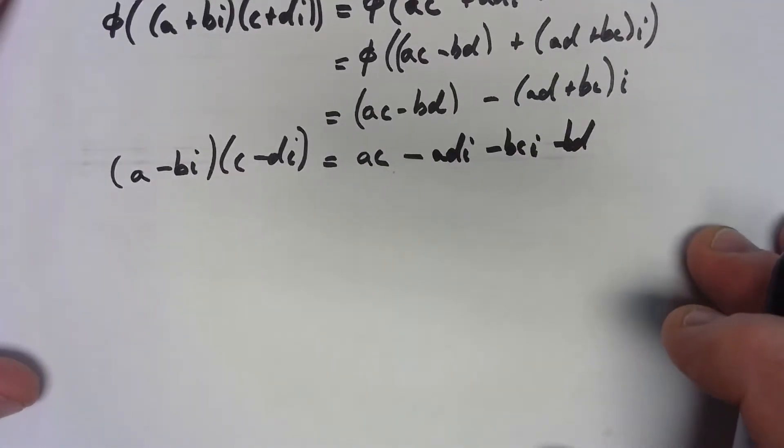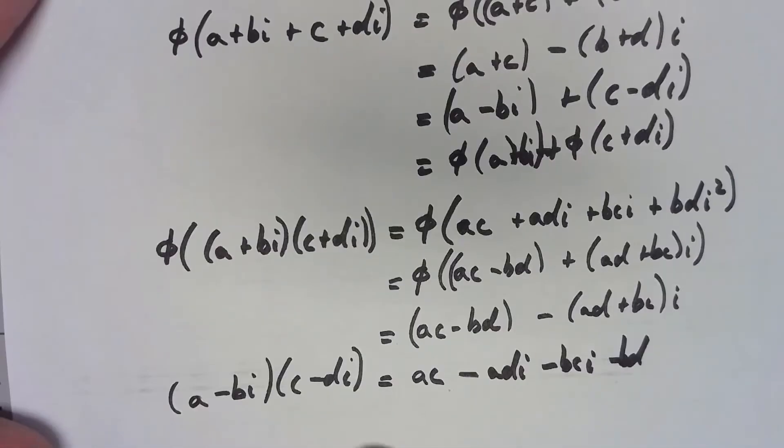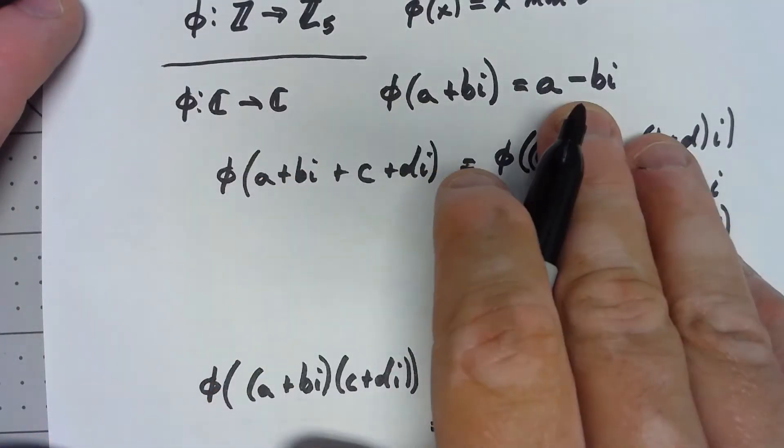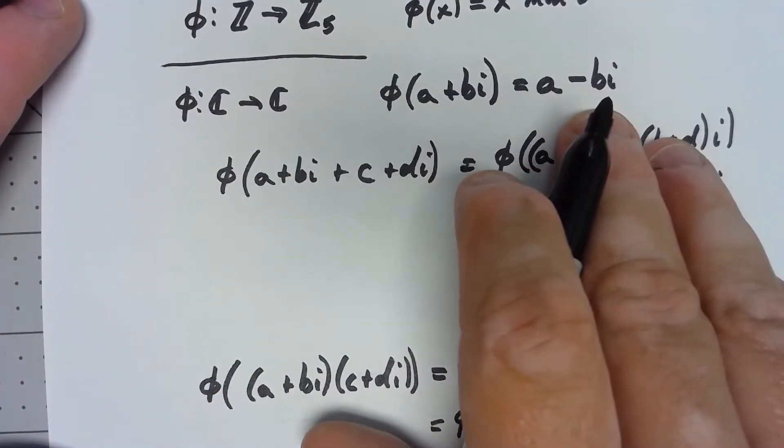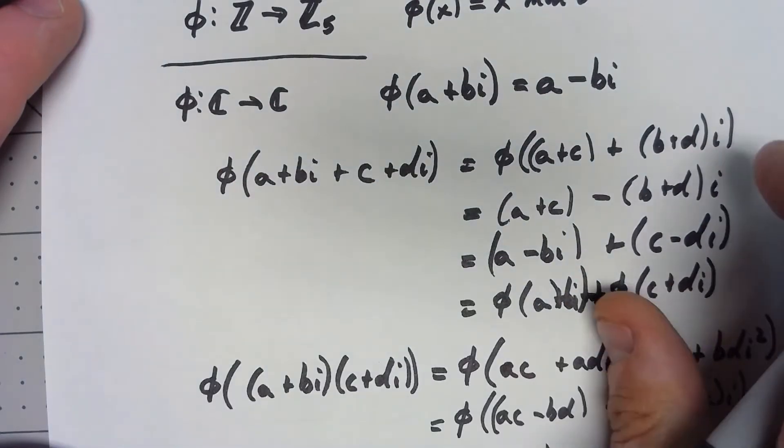Now, because this mapping, just taking the conjugate, is both one to one and onto, this is more than just a ring homomorphism. This is a ring isomorphism.